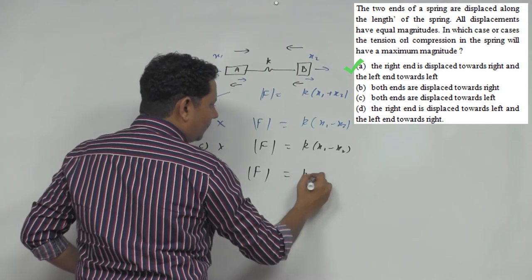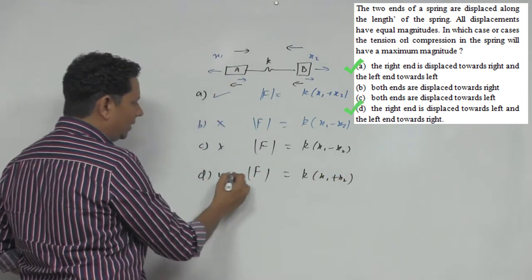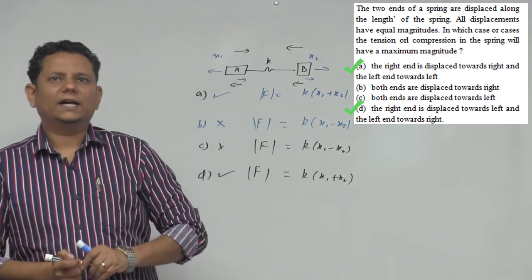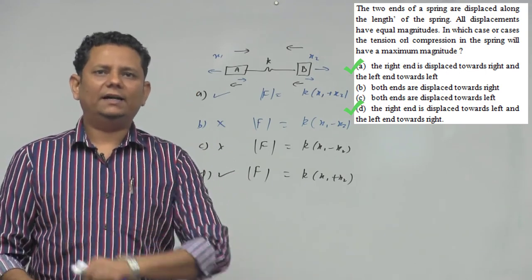The force magnitude is K times (x1 plus x2). So we have maximum force in options A and D. Therefore, A and D are the correct answers.